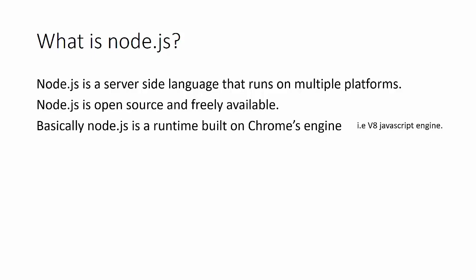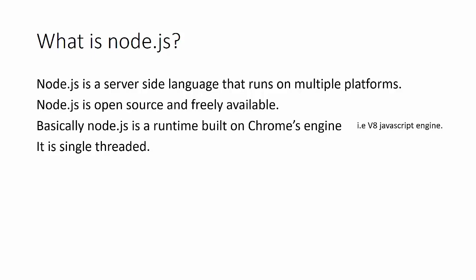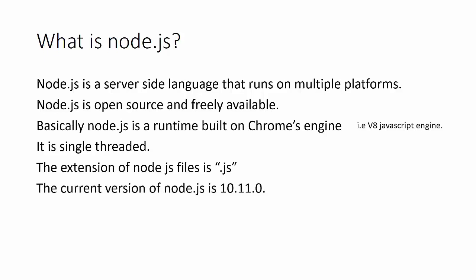For more on the V8 engine, you can visit developers.google.com/v8 — though it is out of scope for this course. Node.js is single-threaded, meaning there is no input-output blockage. It's event-driven, meaning it can process multiple requests at the same time. For example, you can fetch data from a database and simultaneously receive a response from another part of your script without any wait. The current version as of October 1st, 2018 is 10.11.0, but always go for the stable version to ensure good support.